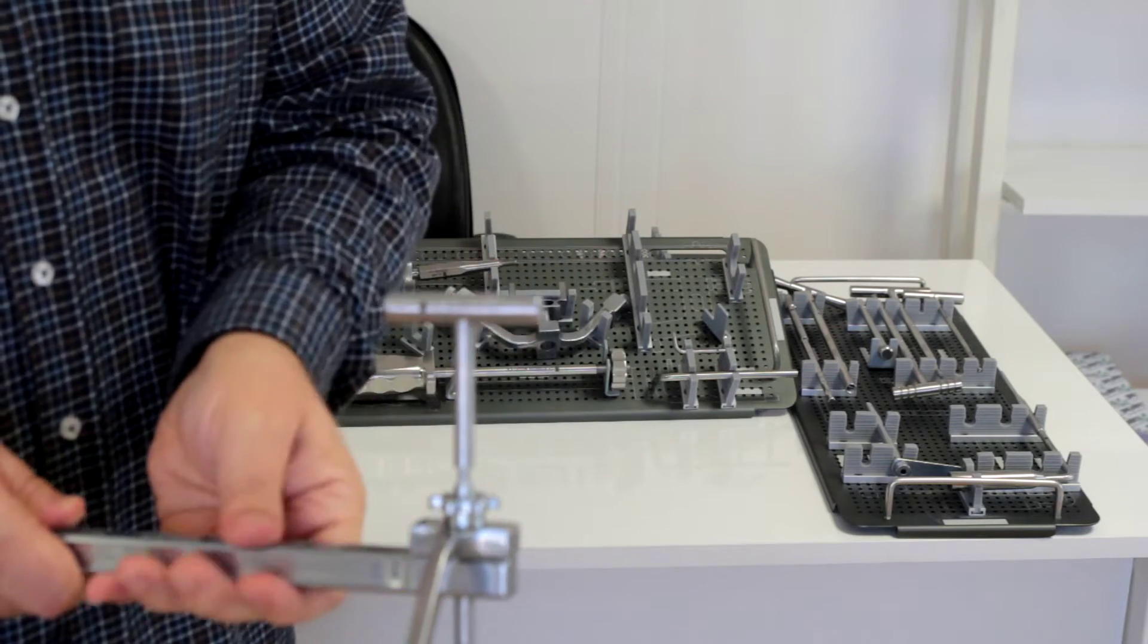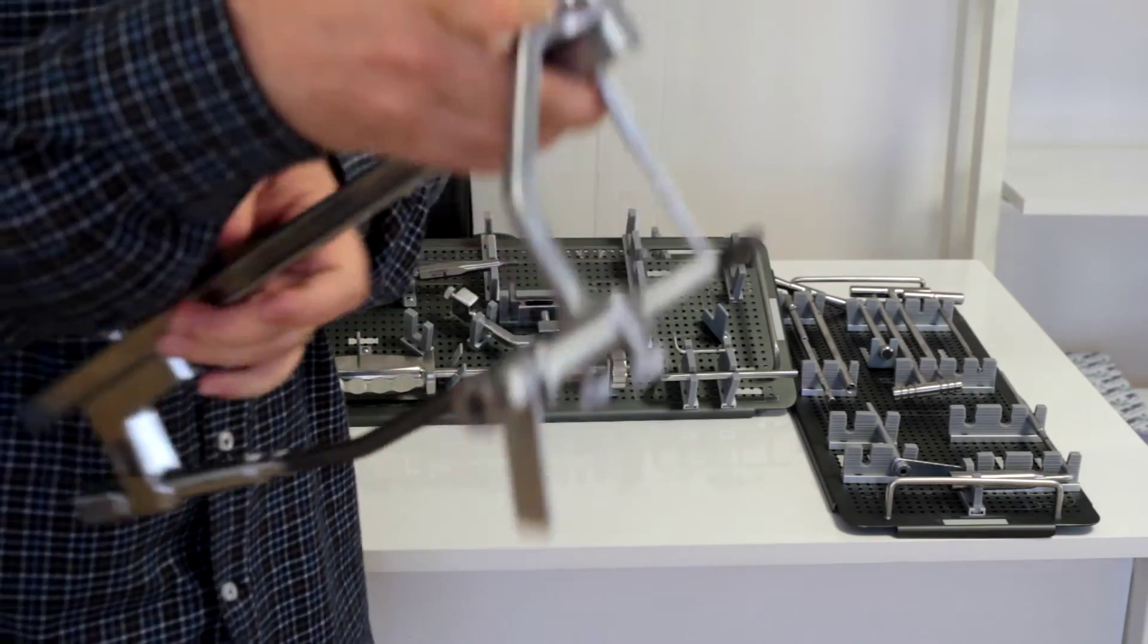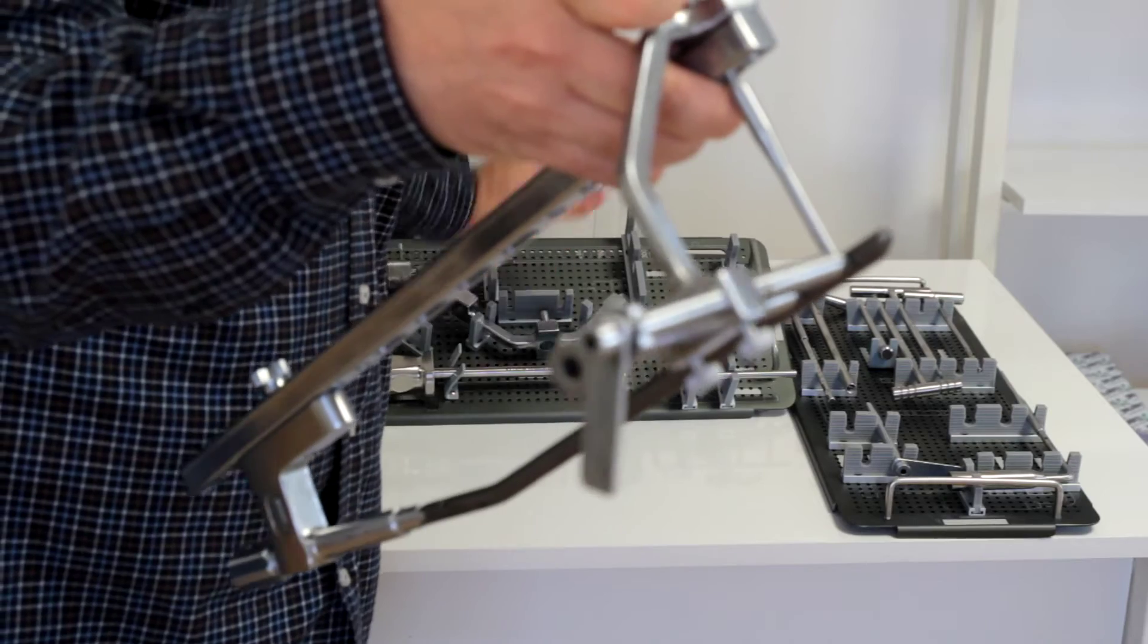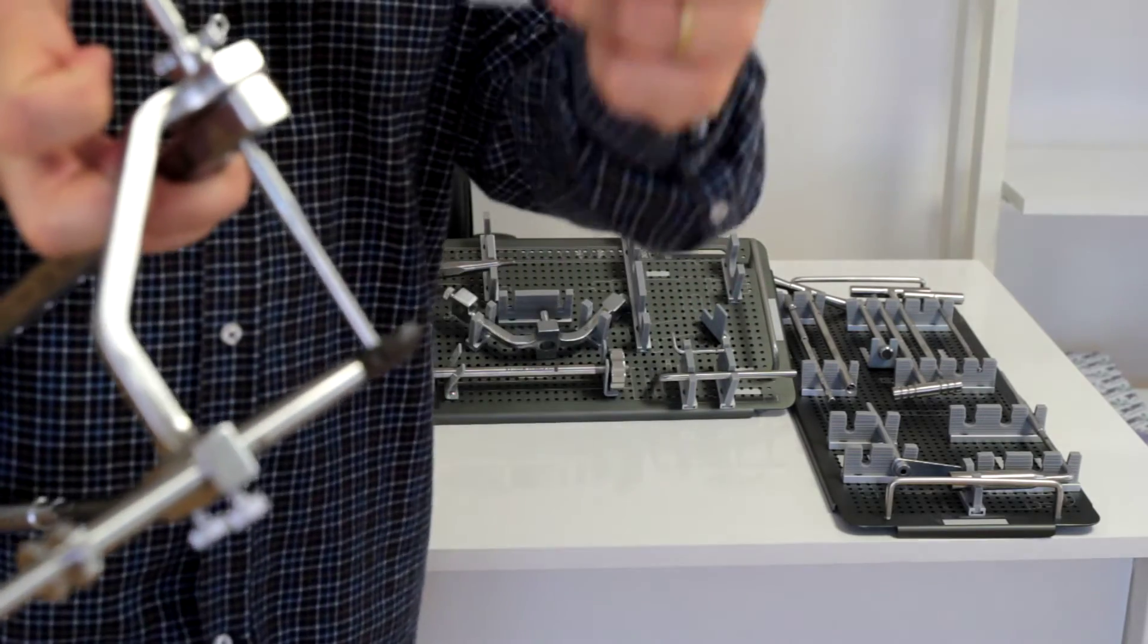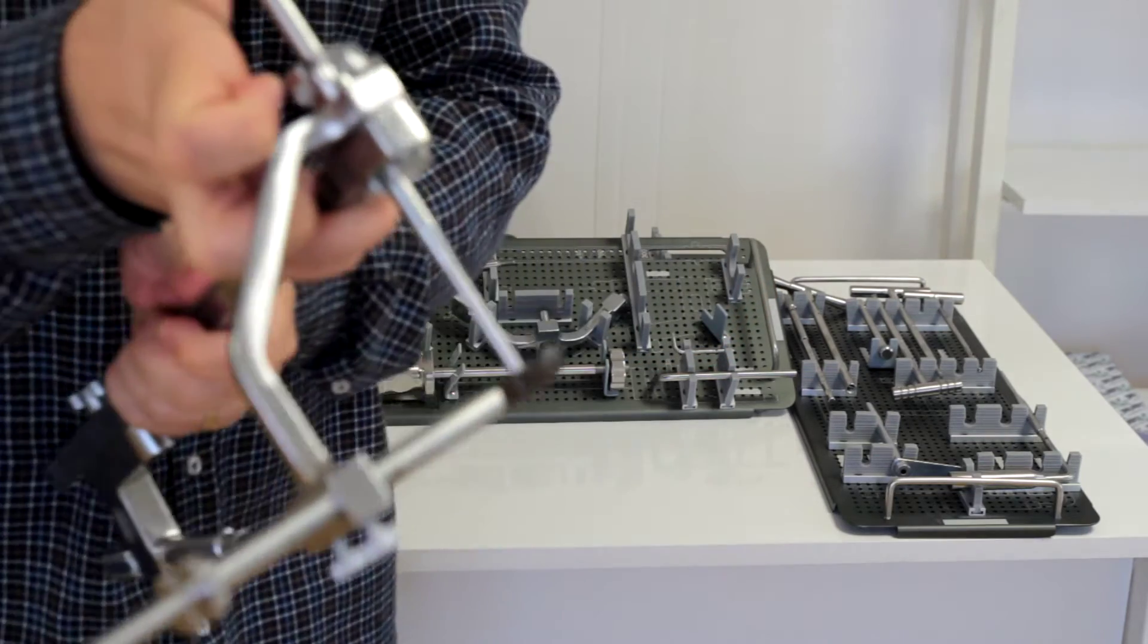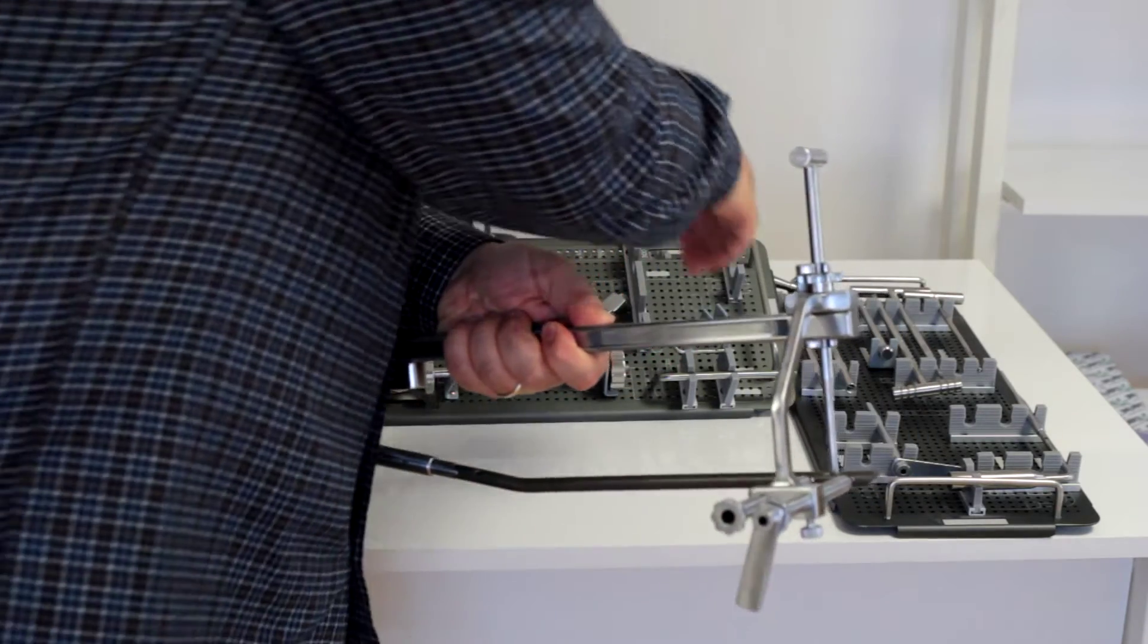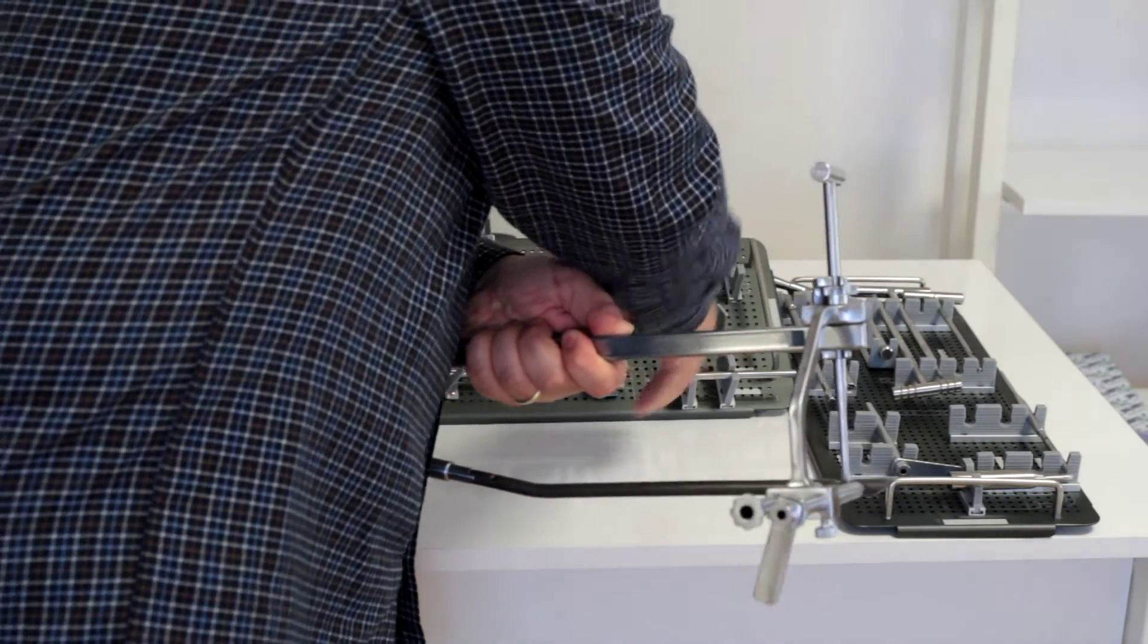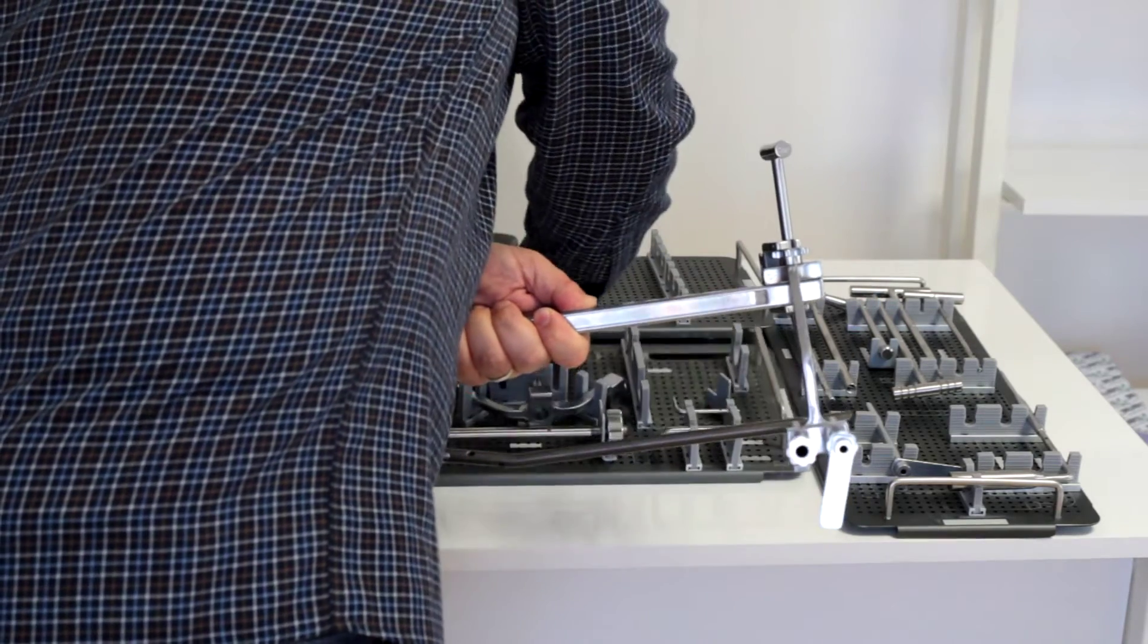Just place the guide, push down, and lock with this U-shaped bar. As you can see here, now the drill can go through.